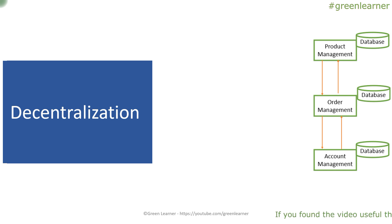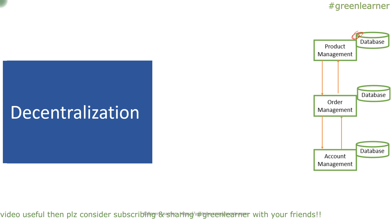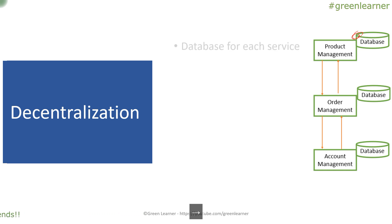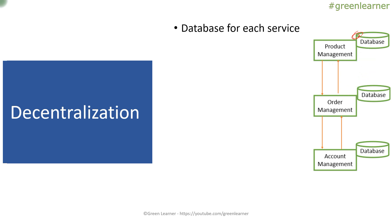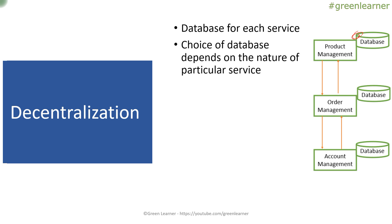The next principle is decentralization. Earlier you had a single database with all tables, but in microservices architecture you have different databases — one for each service. Database decentralization is necessary; services should not share a database. Product Management and Order Management should each have their own. This also means the choice of database depends on the nature of each service — you can use Cassandra for one, SQL for another, Oracle for another — there is no restriction in choosing the database per service.